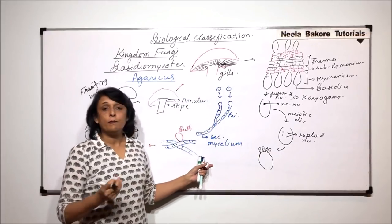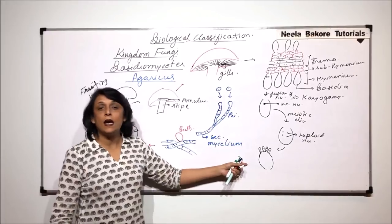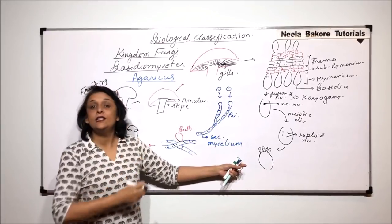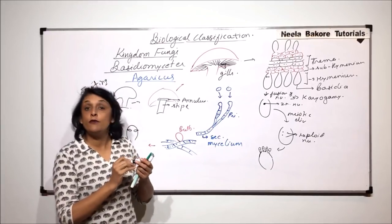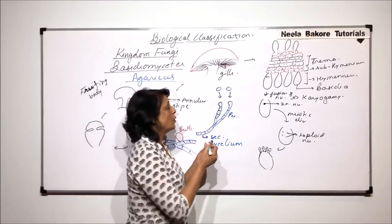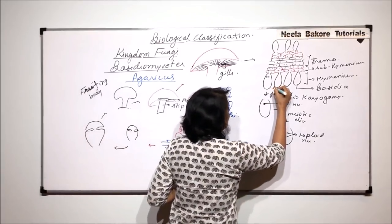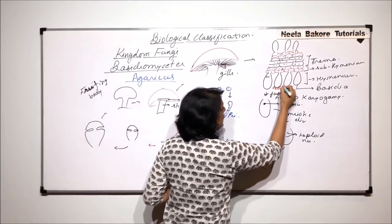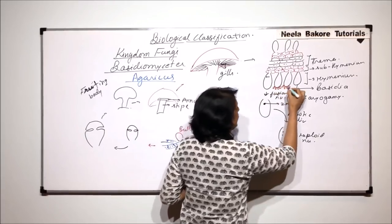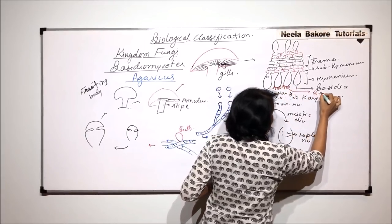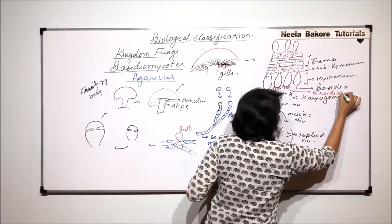Once the reproductive season starts, these baesidia appear and on each baesidium, there would be four baesidiospores. What exactly will be visible to us later on in the reproductive phases, these baesidiospores.